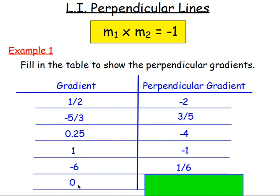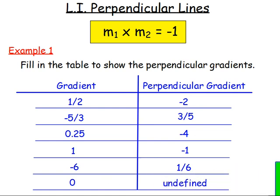The last one: if the gradient was zero, think about what the perpendicular gradient would be. Flipping it upside down and changing the sign doesn't quite make sense for zero. Remember, a gradient of zero is just a horizontal line. Think about what you can say about the gradient if you rotate it 90 degrees to make it vertical — thinking back to lesson one, it is undefined. So the only exception to the flip-and-change-sign rule is when dealing with zero or undefined gradients.